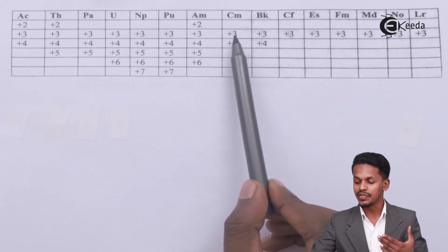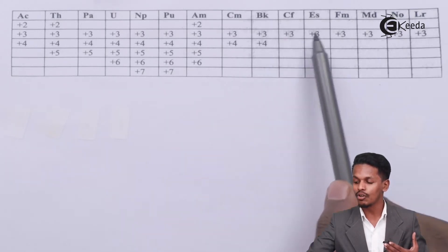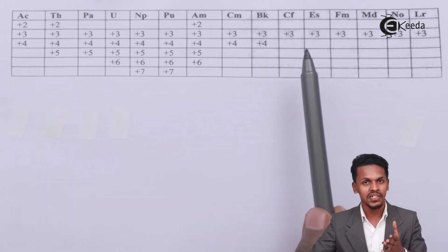For curium, it is +3 to +4. For berkelium, it is +3 and +4. Later on, we find that they have very stable compounds and are basically having +3 oxidation state.